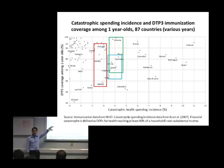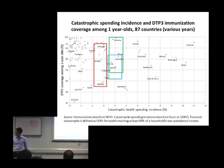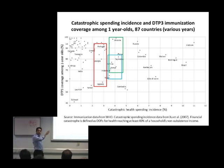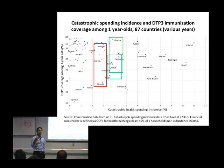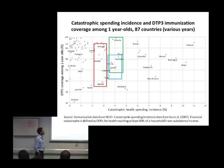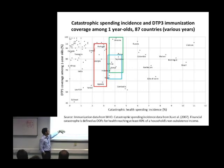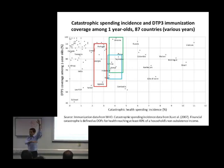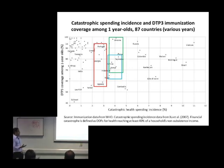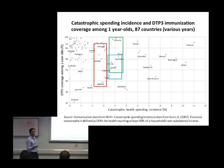The same problems appear if we focus on countries with similar income levels. Middle-income countries like Ukraine, China, and Indonesia all have very similar levels of catastrophic spending incidence but a huge difference in terms of access conditions. The same is true for low-income countries such as Tajikistan, Bolivia, Kenya, and Nepal. If you use skilled birth attendance instead of DTP3 coverage, you face the same kind of picture: very similar levels of catastrophic spending but lots of difference in access conditions.